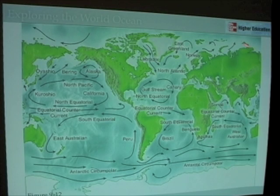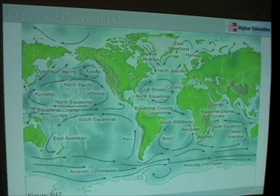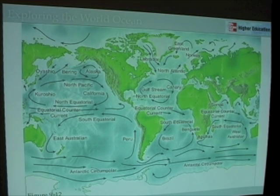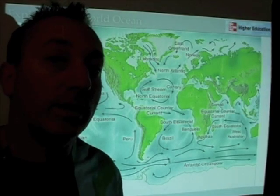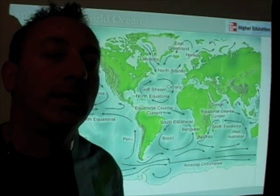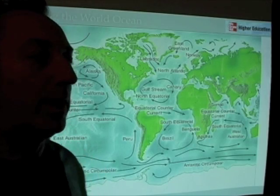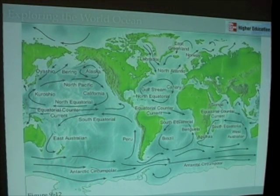The Arctic Ocean has its own circulation system, though we're not going to get into any details about that. The Antarctic has the Antarctic circumpolar current as a major surface circulation factor. We'll also talk about the Indonesian throughflow, which is a really important area of study in surface circulation in modern oceanographic times in the 21st century.